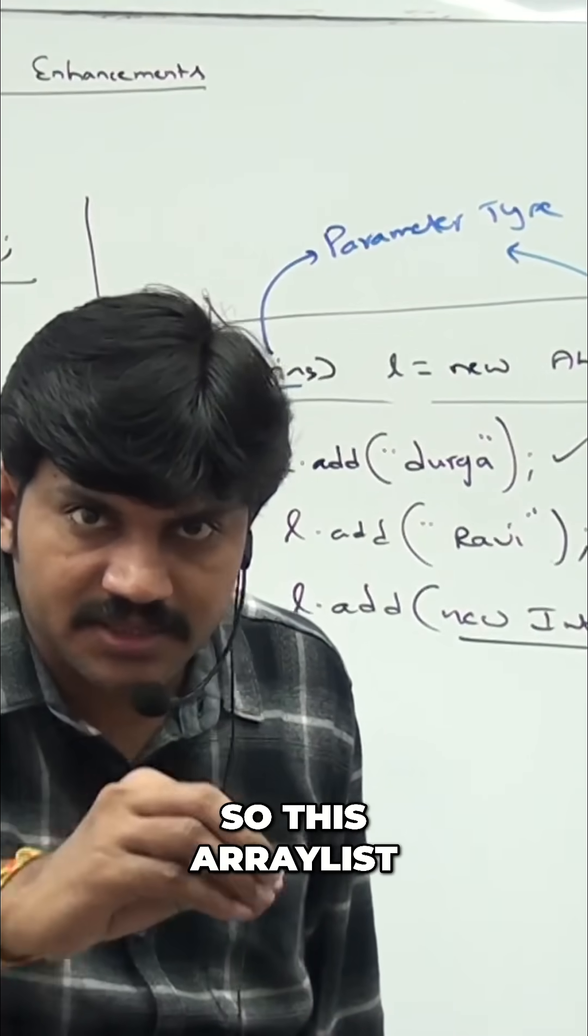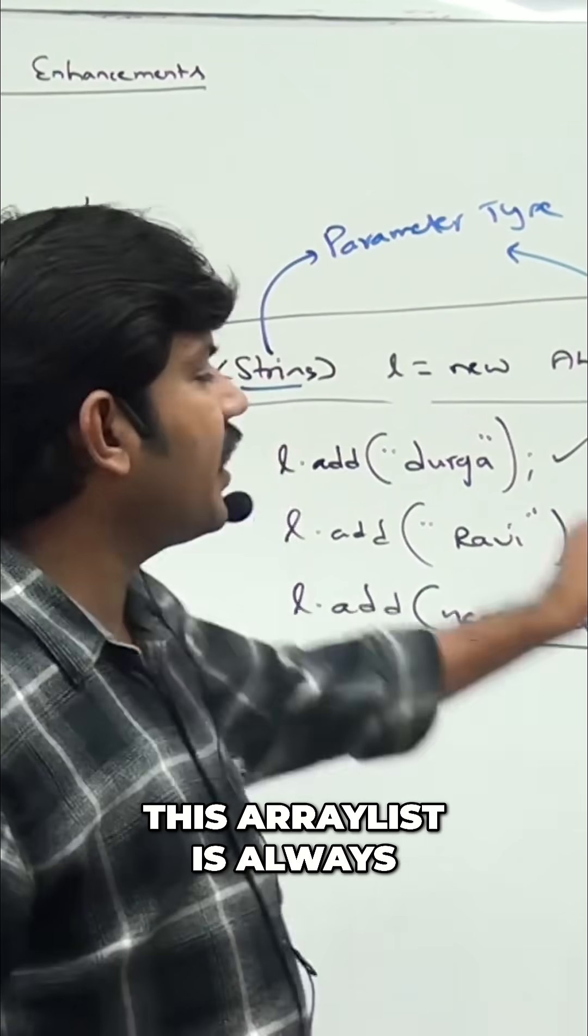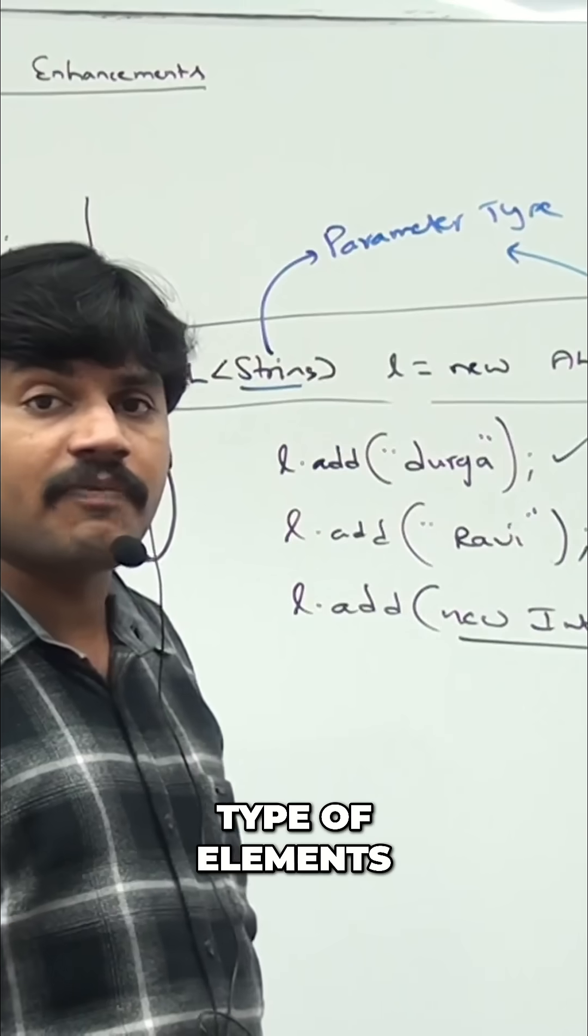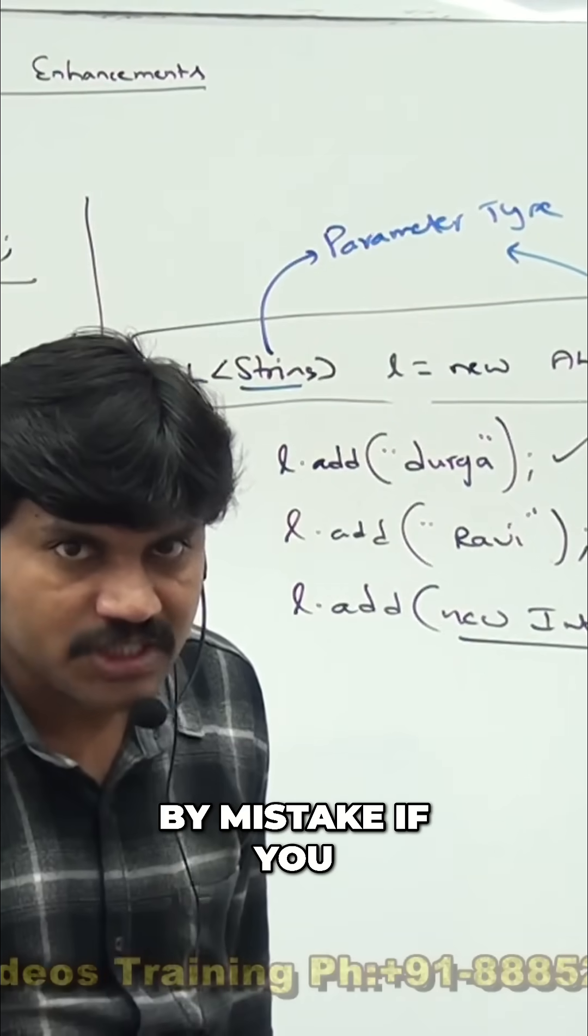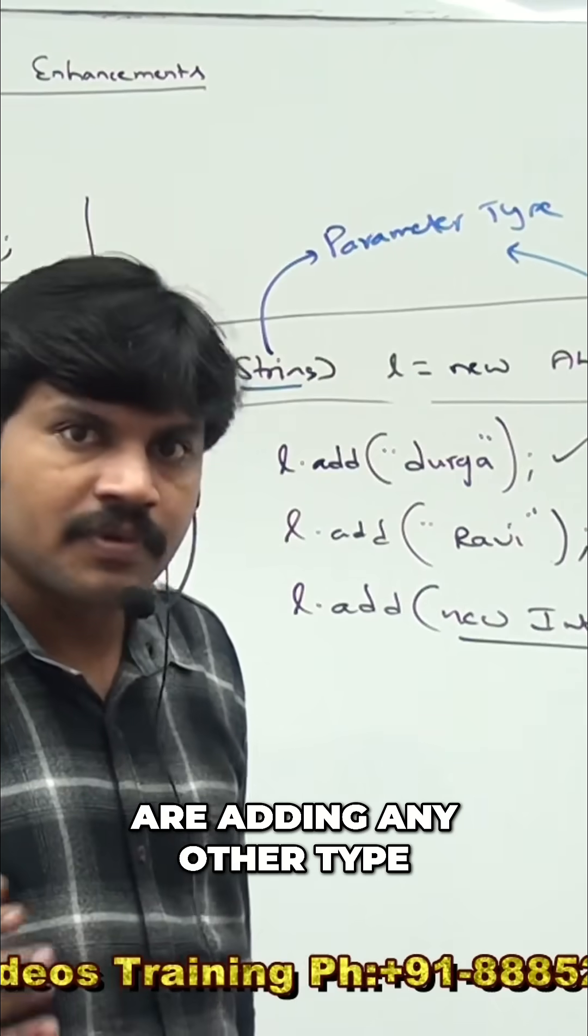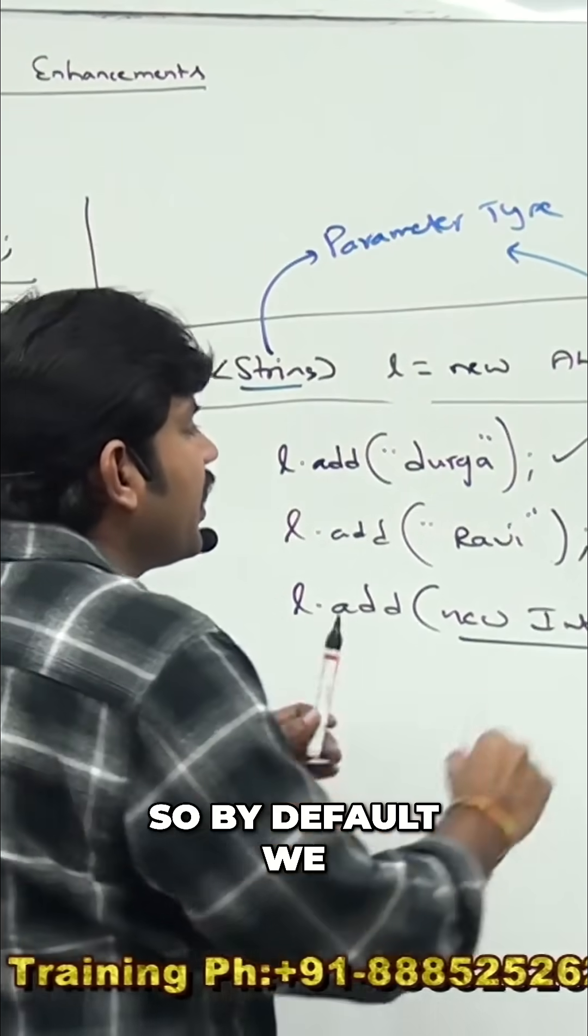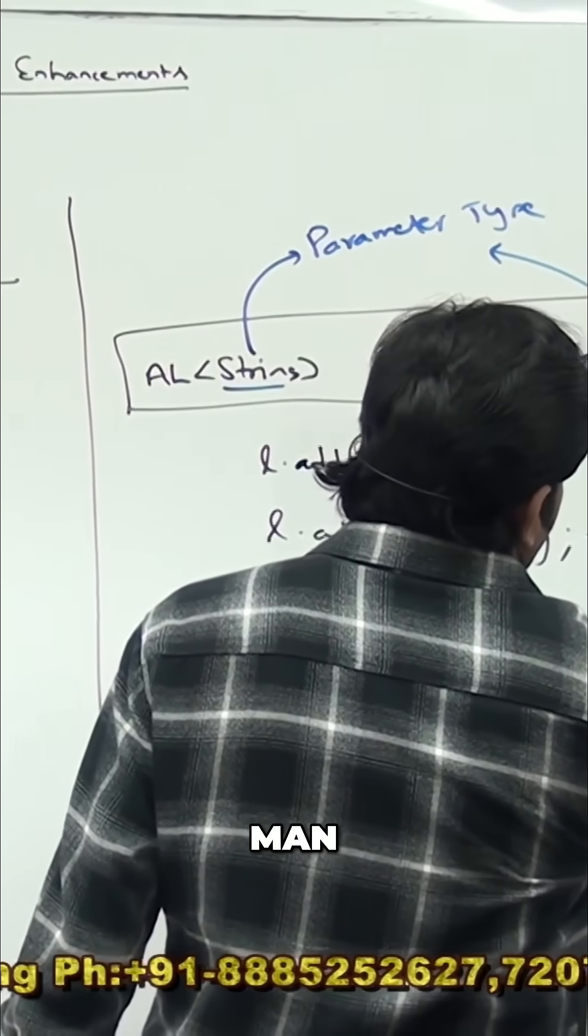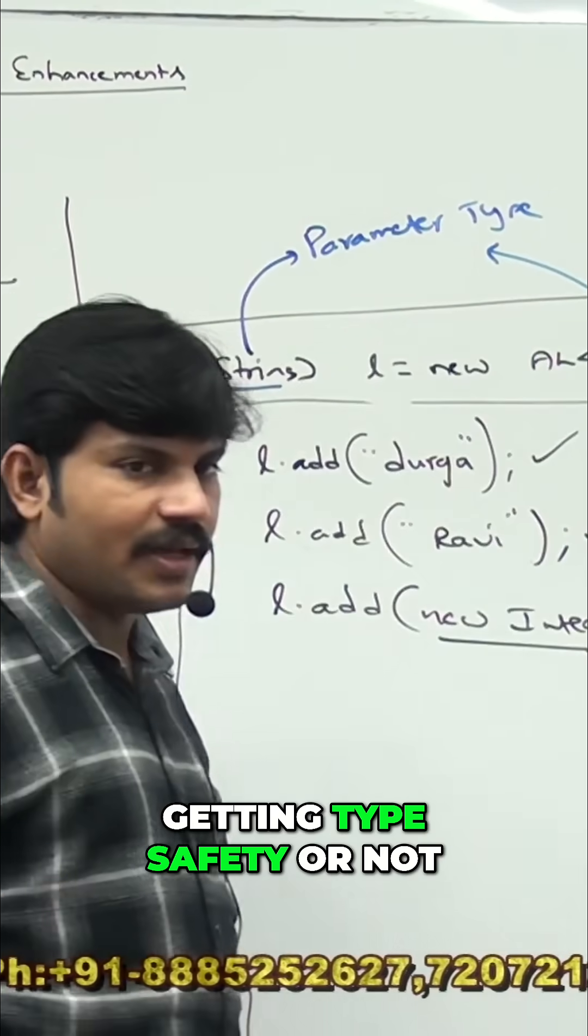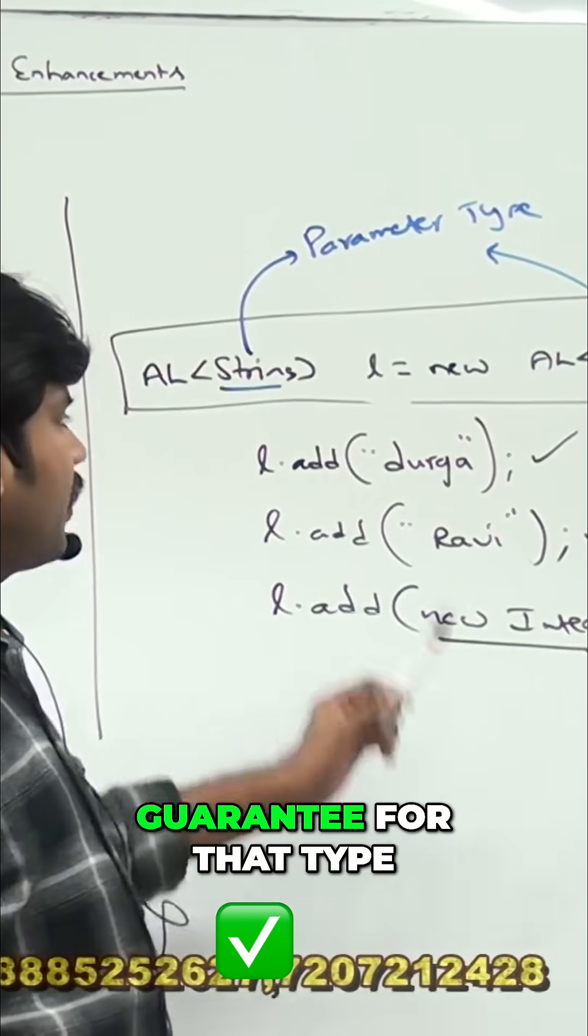What it means is, this ArrayList has a guarantee for the type of elements. This ArrayList is always going to hold only String type of elements. By mistake, if you are adding any other type, compiler will give an error. That's why by default we are getting type safety. There is a guarantee for the type of elements present inside this ArrayList.